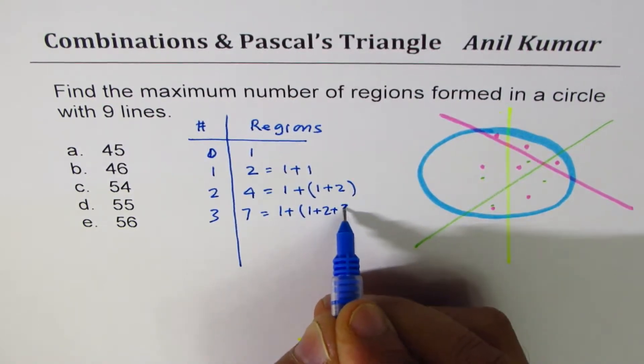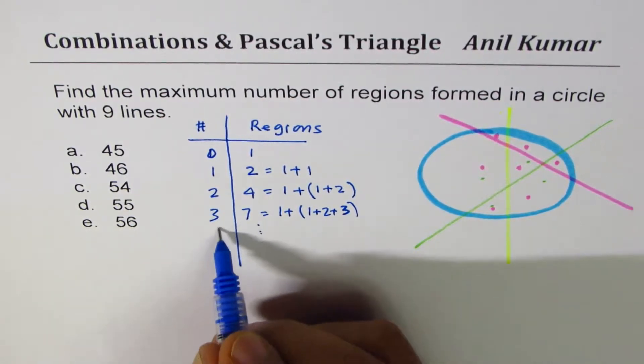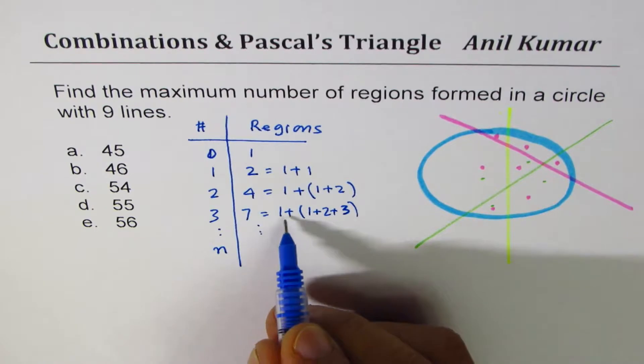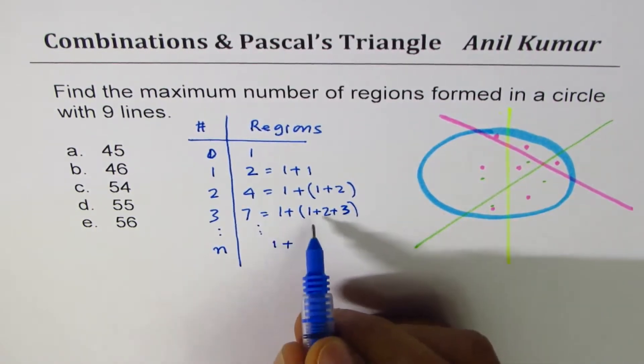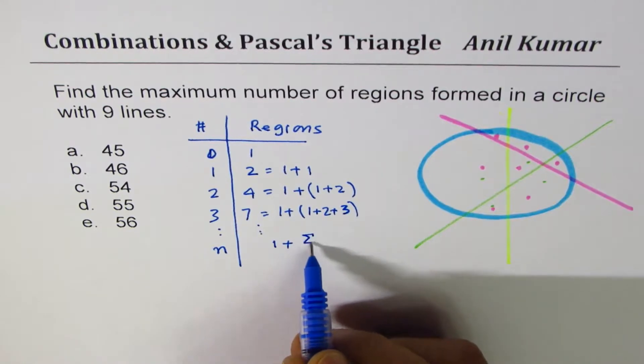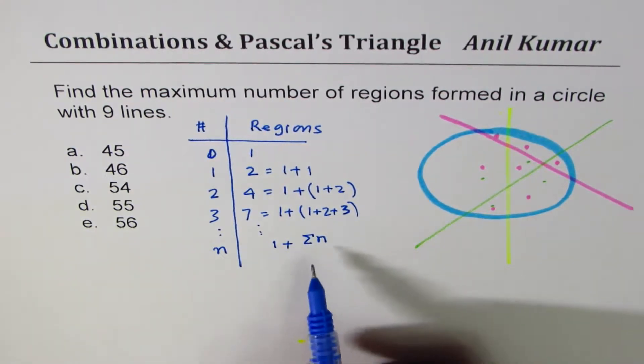That makes it seven. So as you move on, you'll find that for n number of lines, the formula could be one plus sum of n numbers. This is sum of three numbers. Sum of n numbers. So that is the formula which you can use to figure out the answer.